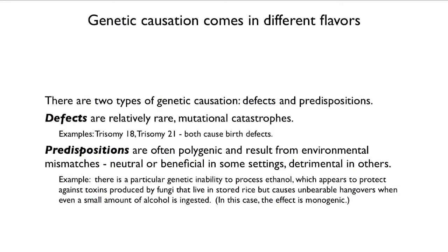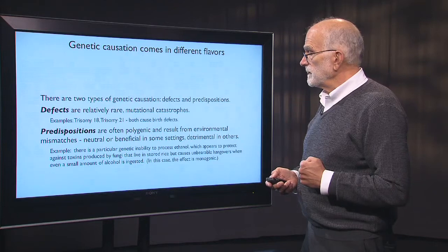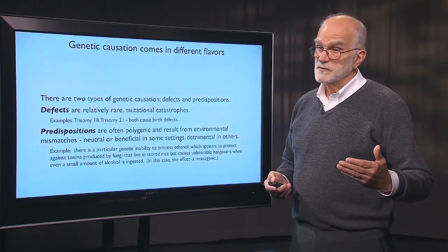As an example of a single-gene defect with an important environmental component: there is a genetic inability to process ethanol that seems to protect its bearers against toxins produced by fungi that live in stored rice, found in Southeast Asia. But people who have that variant can't process ethanol well, which causes unbearable hangovers. We can see a clear interaction between a predisposition that is only elicited when a new thing comes along in the environment — and the production of alcohol in evolutionary history is really quite recent.